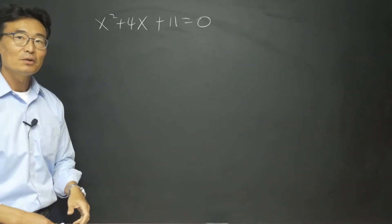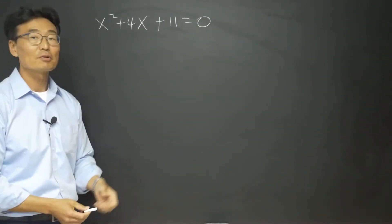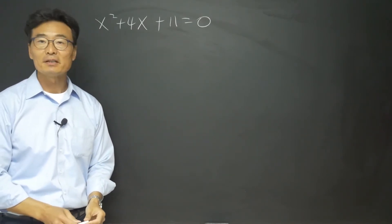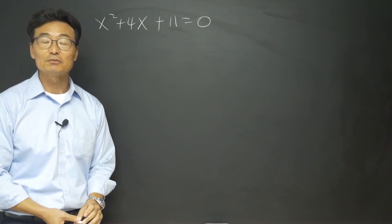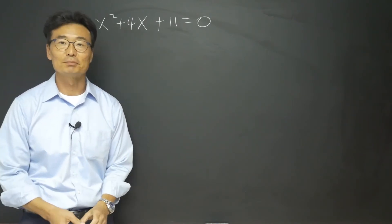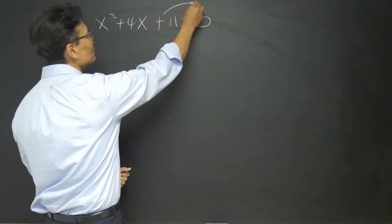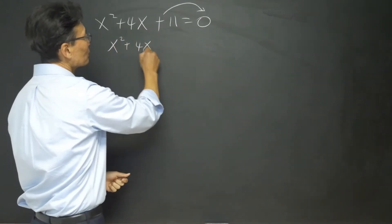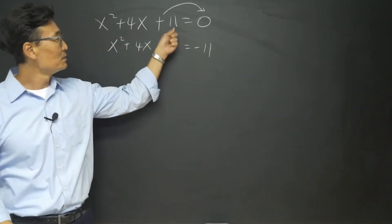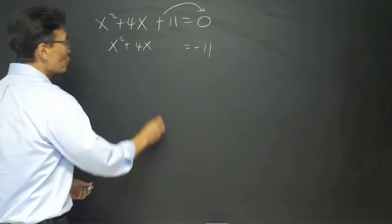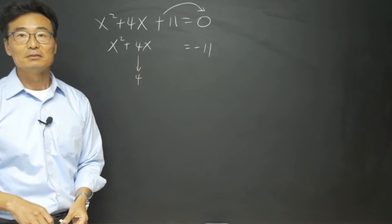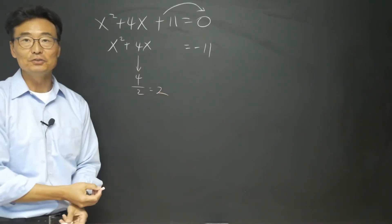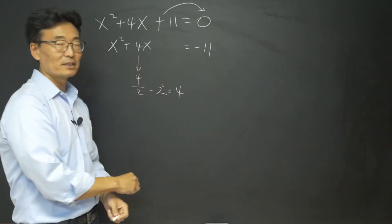With this example — x squared plus 4x plus 11 — it's not factorable. So we can't use the method from section 4. We'll use completing the square. First, take that 11 and bring it to the right side of the equal sign, giving us negative 11. Notice the sign change. Then take the coefficient of x, meaning 4, divide it by 2, giving us 2, and square it, giving us 4.